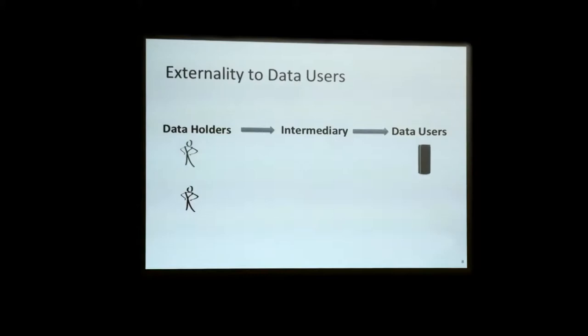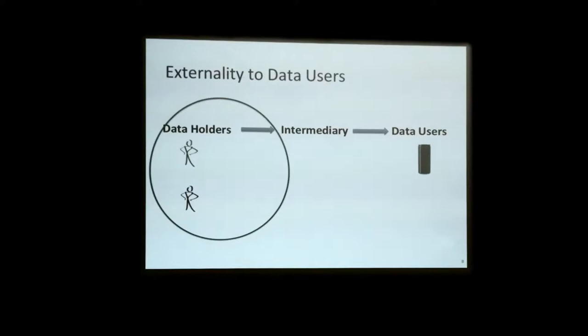The model talks about informational externality as a result of a single data holder transferring data to the intermediary having an externality to other data holders. But when we have multiple data users — since it's costless to generate another copy of data — I can sell my data to one data user or multiple data users. If there are two companies both selling energy drinks, they're essentially competing on information and there is an externality on the data user side too. If I consider externality on the data user side, how does the price of data work? And what's the optimal way to think about surplus and allocating the value generated by data?